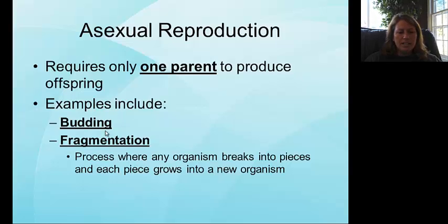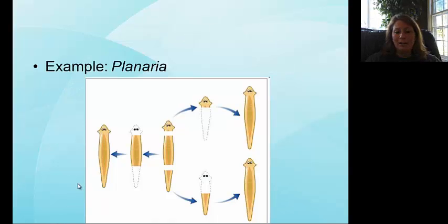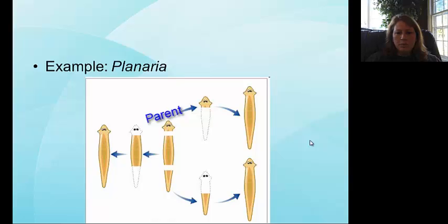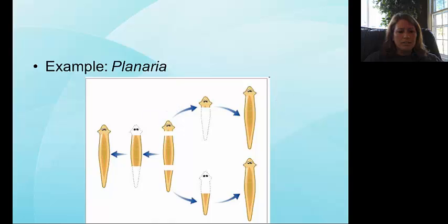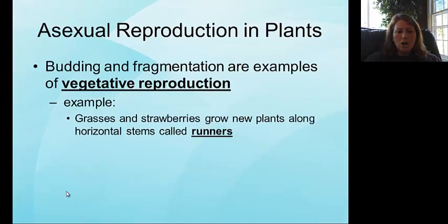For asexual reproduction there are a couple of different examples: budding and fragmentation. When fragmentation occurs — and this can be in both plants and animals — the organism literally breaks into little pieces or fragments, and then each piece grows into a new individual. A good example is planaria, a flatworm. The complete flatworm breaks into pieces: the head becomes a new organism, the tail becomes a new organism, and the midpiece becomes a new organism. So from one organism you end up with three new organisms. In plants, this is called vegetative reproduction.